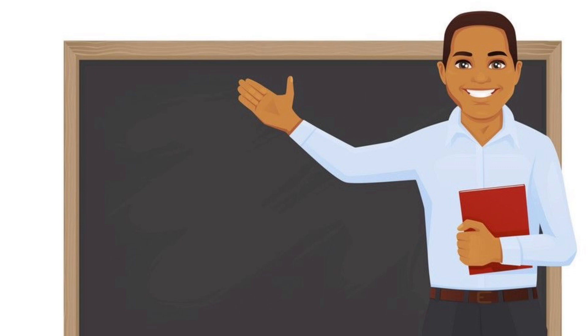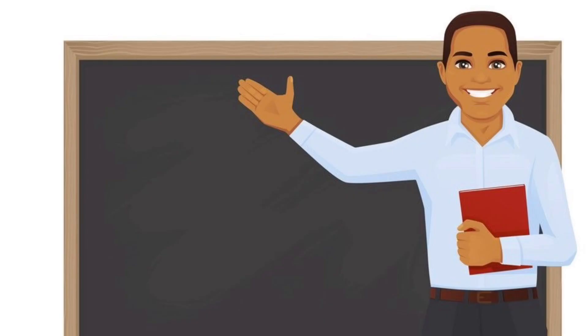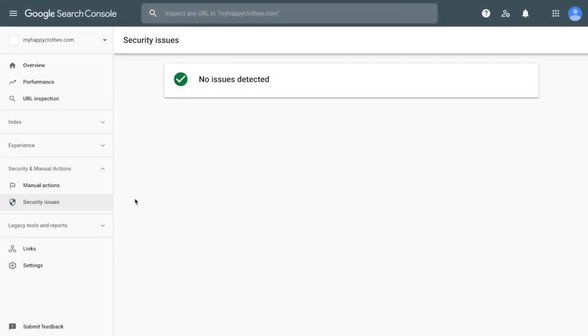The security issues report lists indications that your site was hacked or behavior on your site that could potentially harm a visitor or their computer. An example of this is installing unwanted software on a visitor's computer.